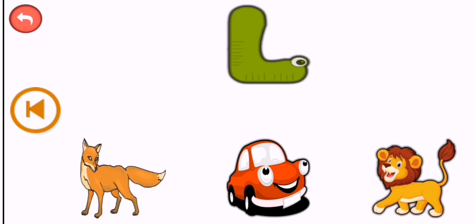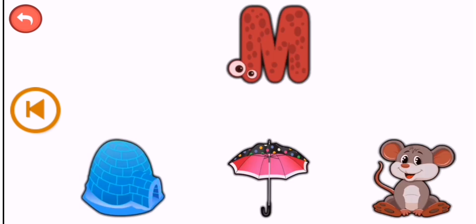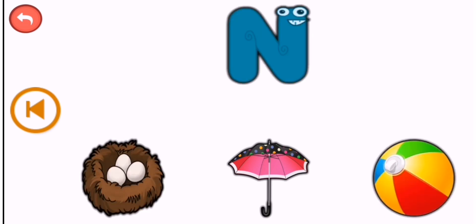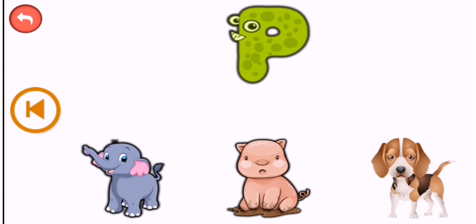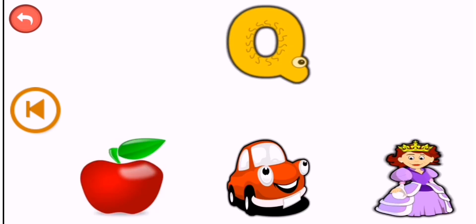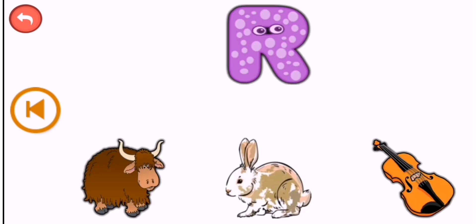Guess below the picture. L — lion. M — mouse. N — nest. O — owl. P — pig. Q — queen. R — rabbit.